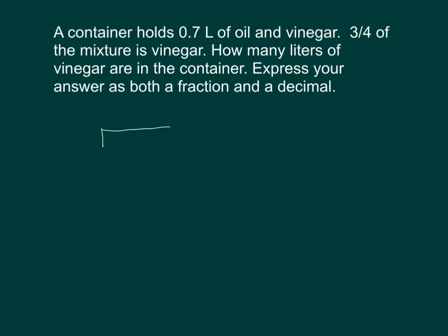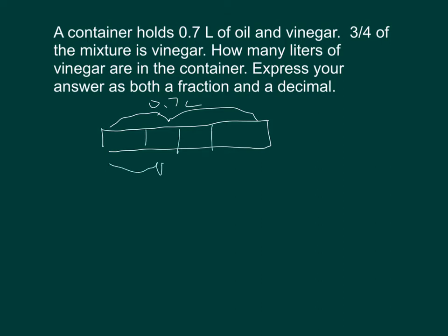Let's start by drawing a tape diagram. This is the whole container, and the entire container holds 0.7 liters. Of that, three-quarters of it is your vinegar, and that's what we're trying to solve for — three-quarters of 0.7 liters.